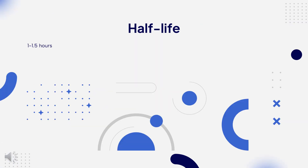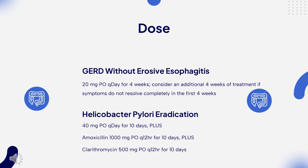Half-life: 1–1.5 hours. Dosing — GERD without erosive esophagitis: 20 mg PO once daily for 4 weeks; consider an additional 4 weeks of treatment if symptoms do not resolve completely. GERD with erosive esophagitis: 20–40 mg PO once daily for 4–8 weeks. If oral therapy is inappropriate or not possible: 20–40 mg once daily for up to 10 days; switch to PO once patient is able to swallow.